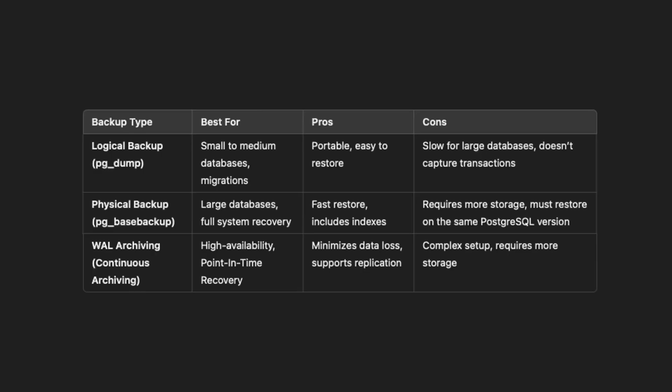You need to be careful because WAL files can consume significant space, and it is a bit more complex to set up than the other backup options. To summarize: if you need a quick and simple setup, use pg_dump; if you need fast recovery and full backups, use pg_basebackup; and if you need real-time backup and point-in-time recovery, use WAL archiving.